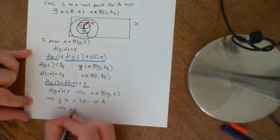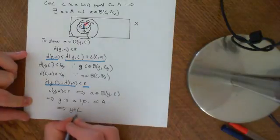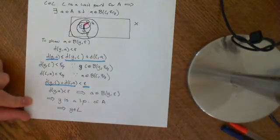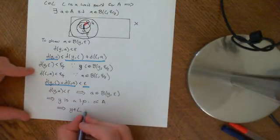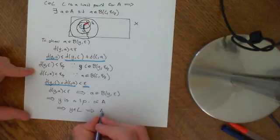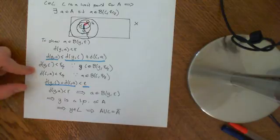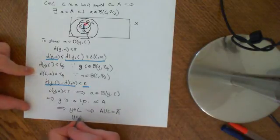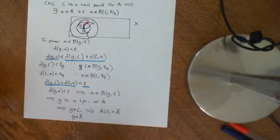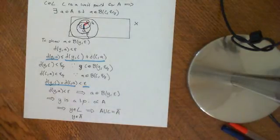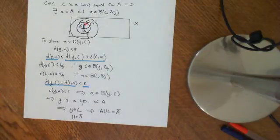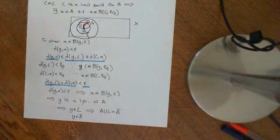That implies that Y is an element of L, because L is the set of all limit points of big A, which implies that when I take A union big L — which is what we define to be A closure — then Y is an element of A closure. So any limit point of the set A closure is itself contained within A closure, which proves that A closure is closed.